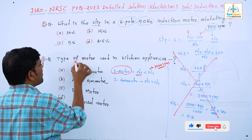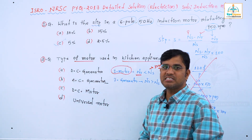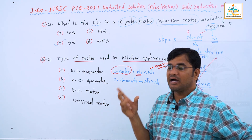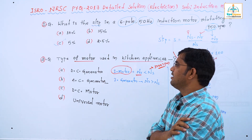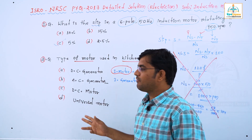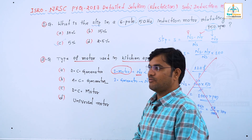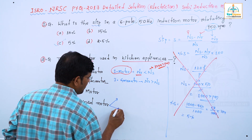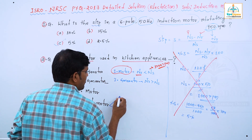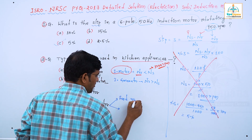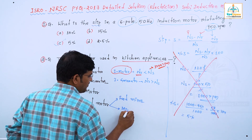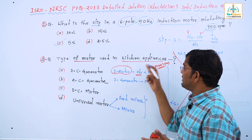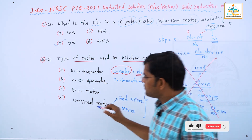Second question: which type of motor is used in kitchen appliances? This is about special types of motors. The answer is the universal motor. The universal motor application includes food mixers and mixies. Option D is the correct answer.